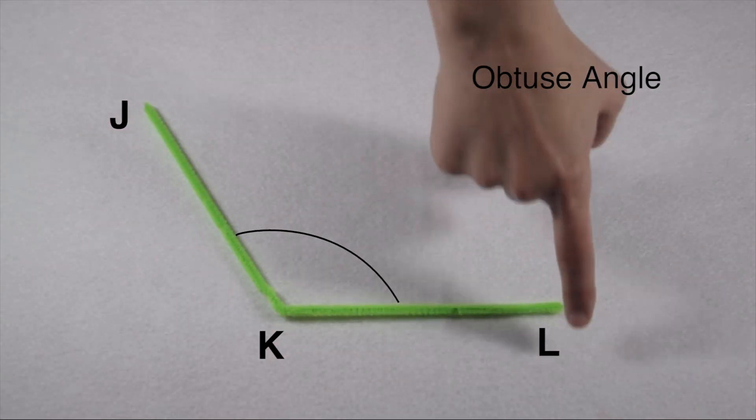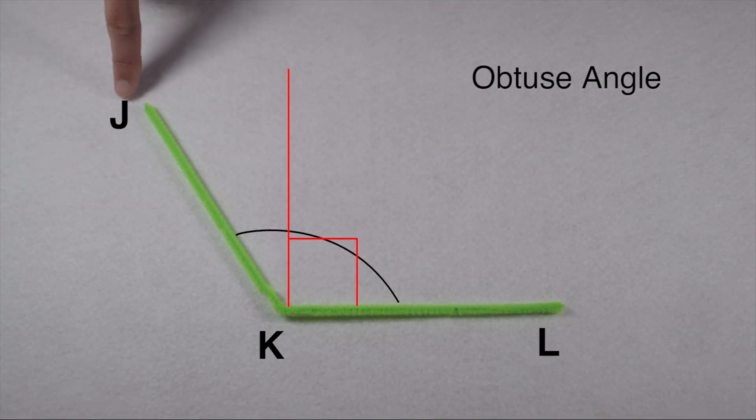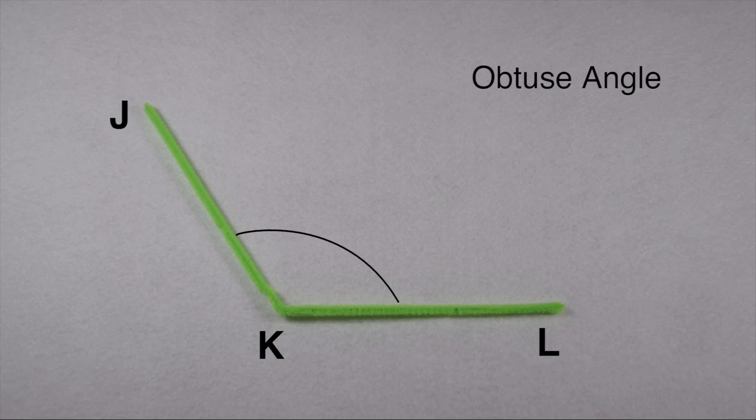Angle J, K, and L we can see goes beyond that 90 degree mark. Since angle J, K, and L is greater than 90 degrees, but less than 180 degrees, it's considered an obtuse angle. Obtuse angles fall between 90 degrees and 180 degrees.